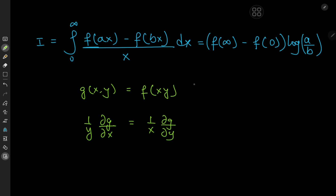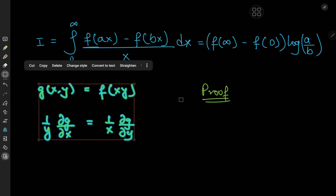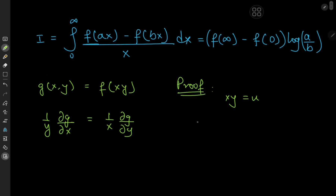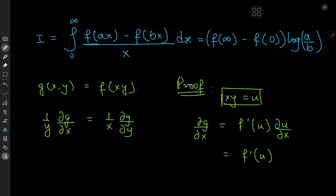The proof is actually pretty simple. We start by calling x times y a new variable u. The partial derivative of g with respect to x, by the chain rule, is the derivative of f with respect to u times the derivative of u with respect to x, which is y. So this means the derivative of f equals (1/y) times the partial derivative of g with respect to x.